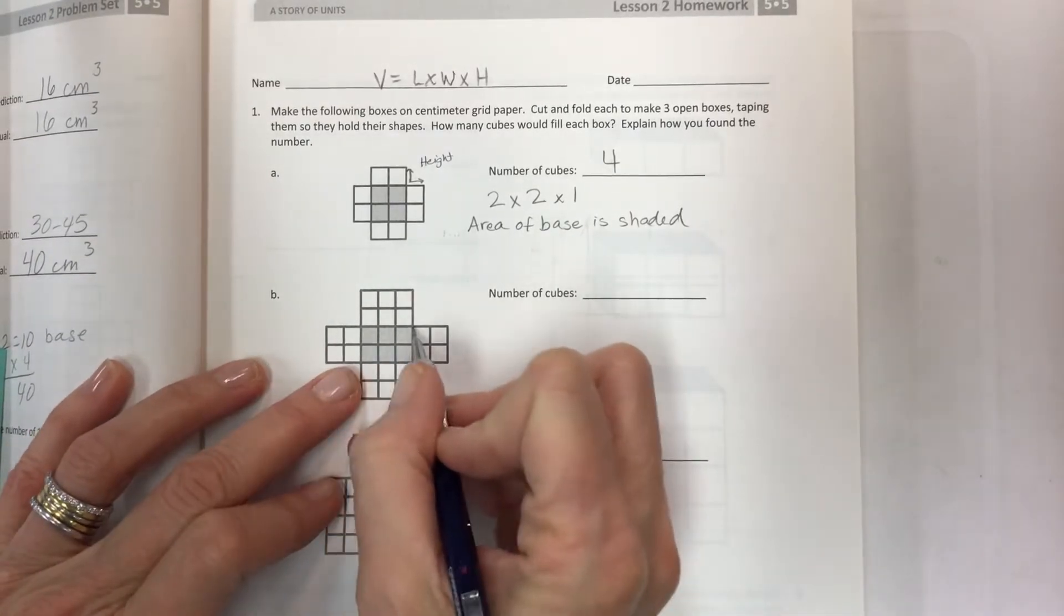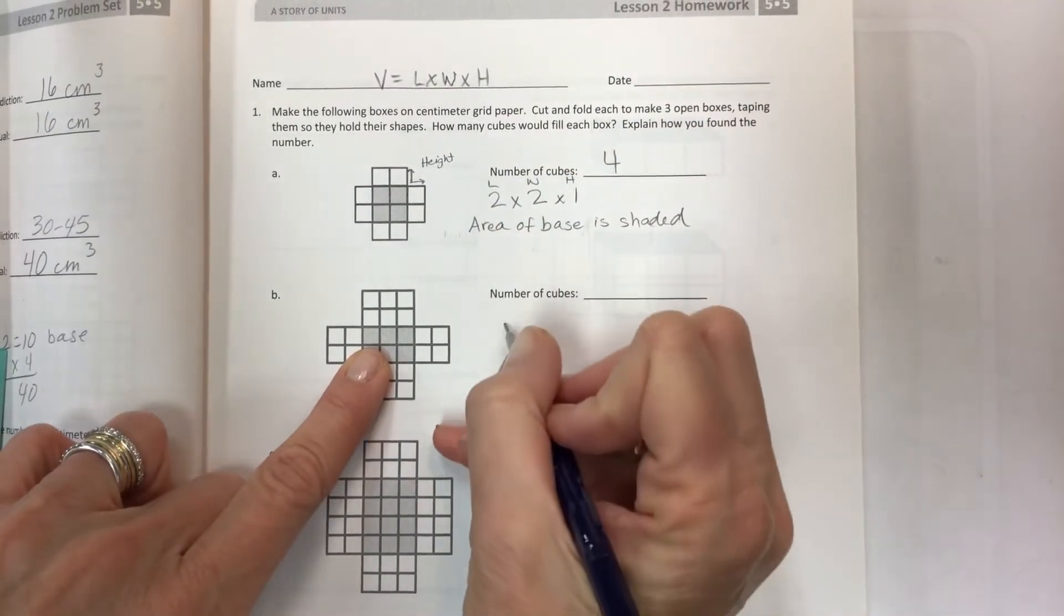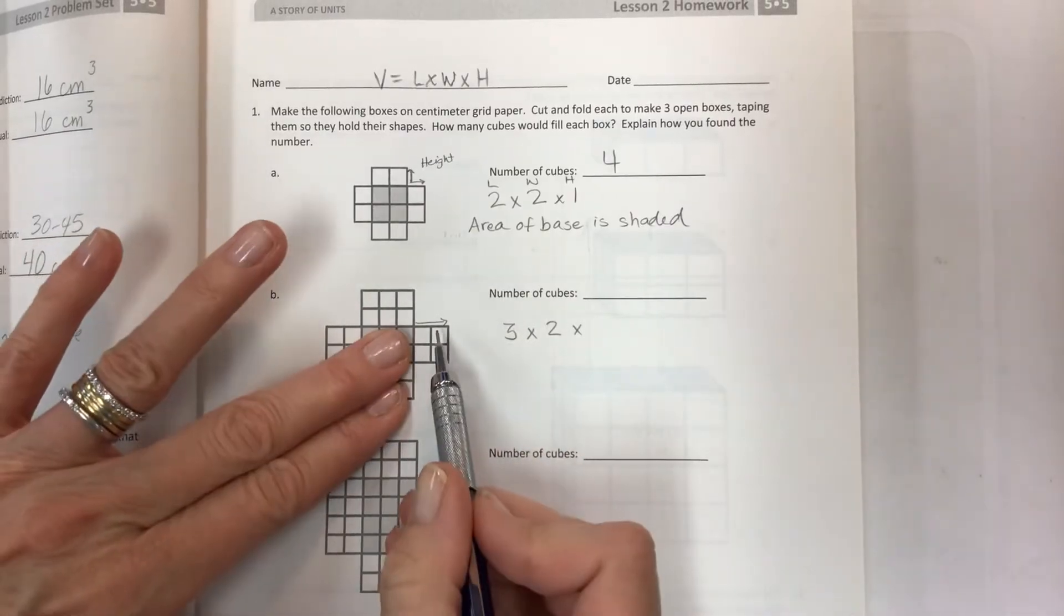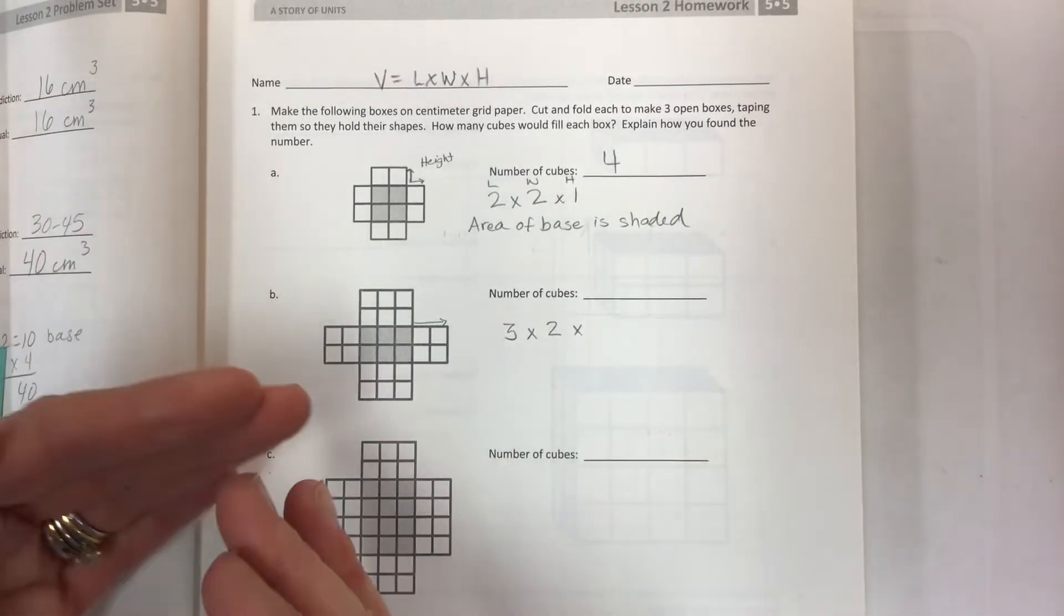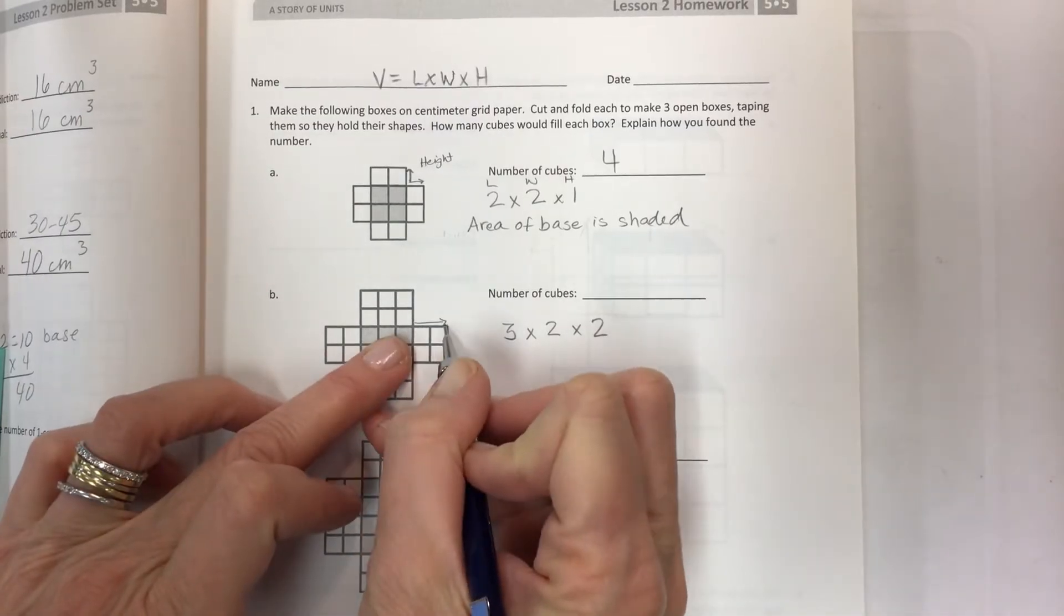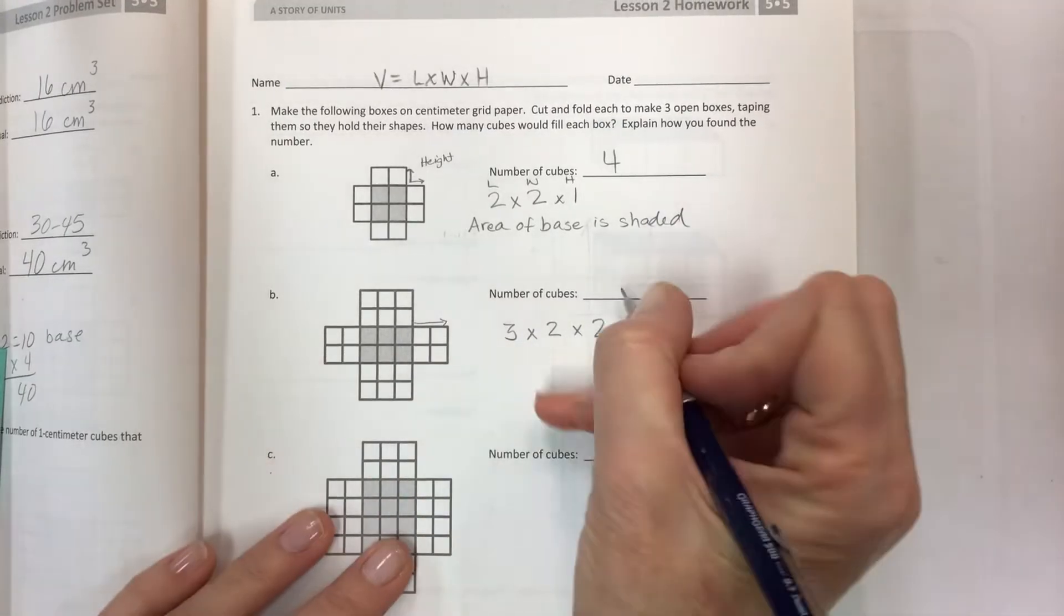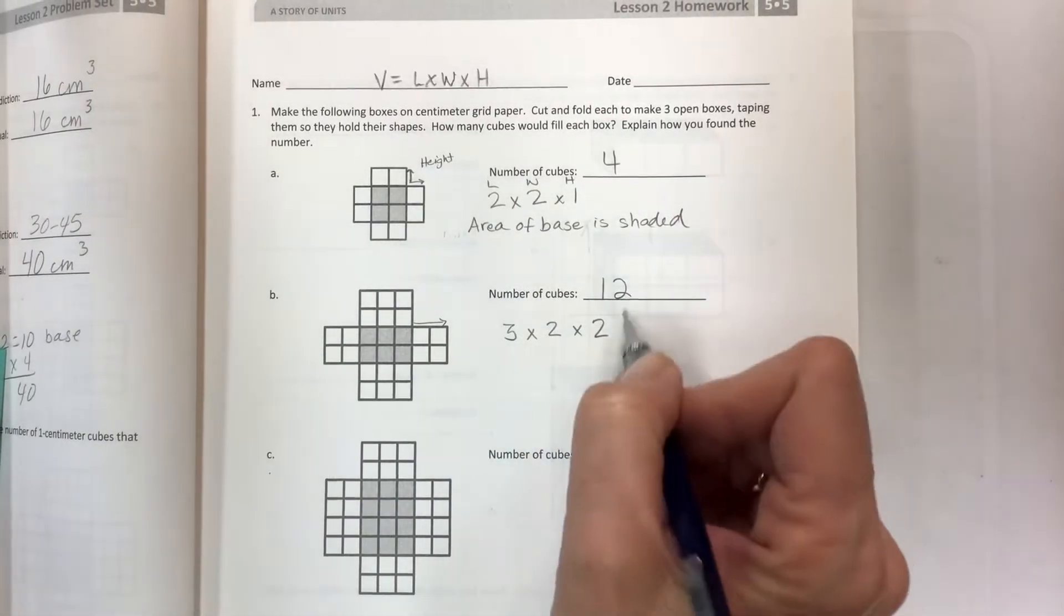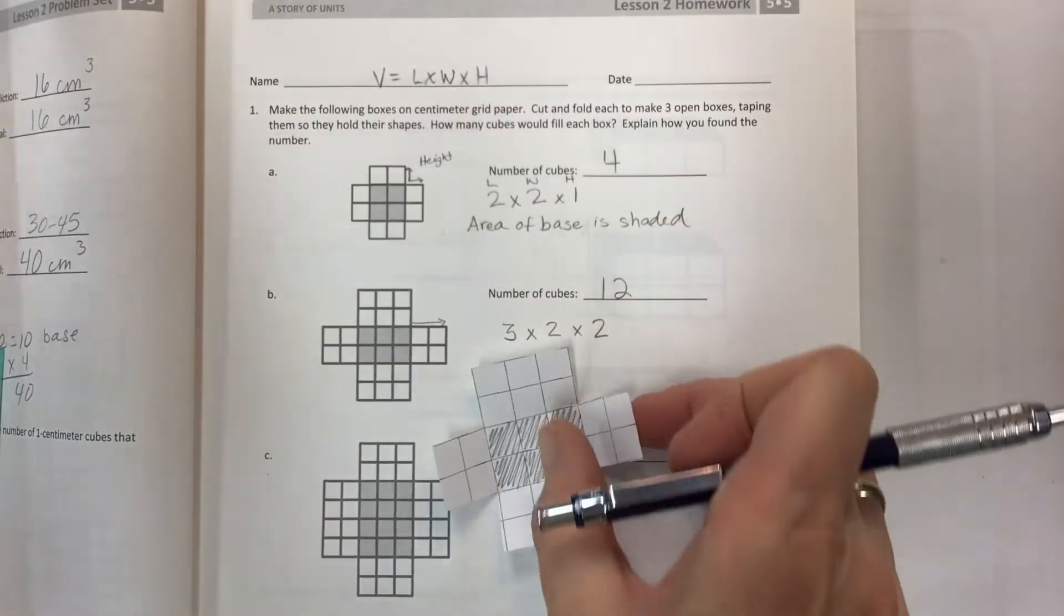This is a 3 by 2 length times width. Remember to use the volume in this order: length times width times height. So 3 times 2 times what's the height? The height is going this direction—it's 2. So 3 times 2 times 2, you can either do 4 times 3 or 6 times 2, either way. It's number of cubes here, not the volume where you have to label it and put centimeters cubed, not yet on this one.